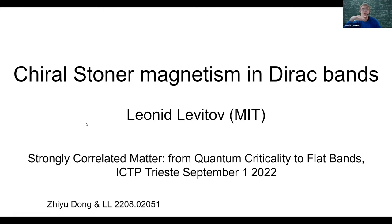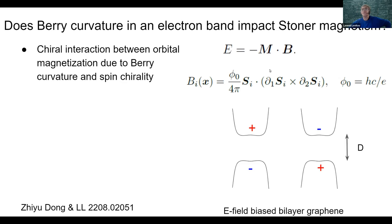The question is: how is band magnetism described by Stoner instability affected by Berry curvature in the band? Whether Berry curvature in a band has any effect on Stoner magnetism at all, and if it does, what is it?